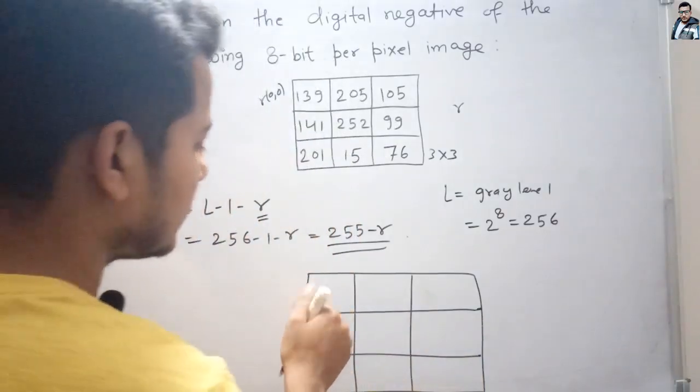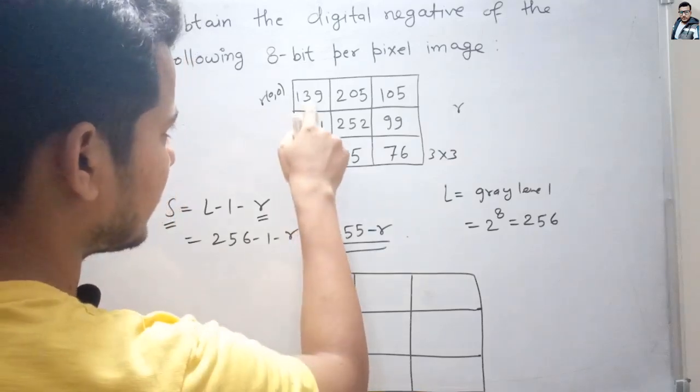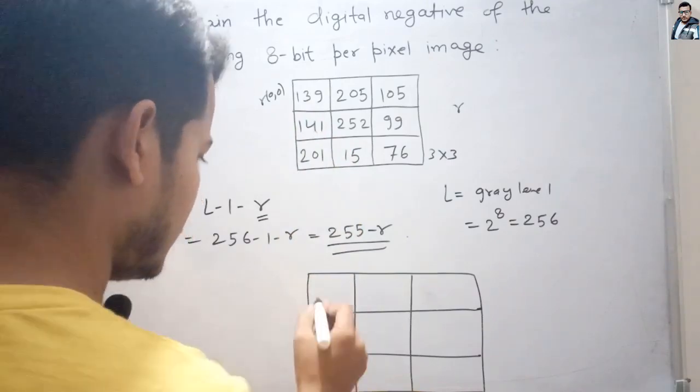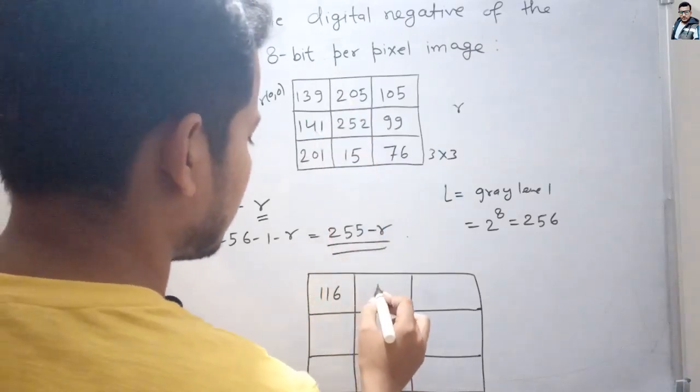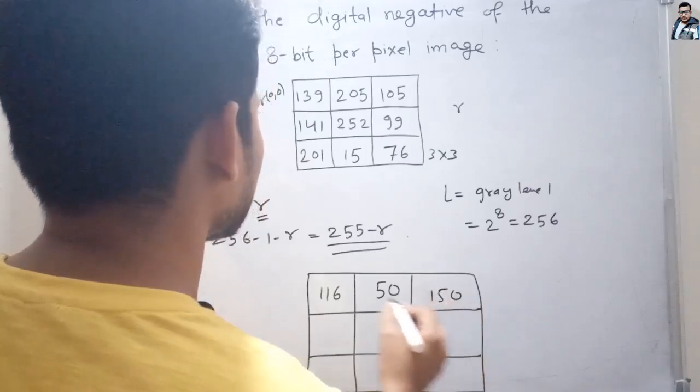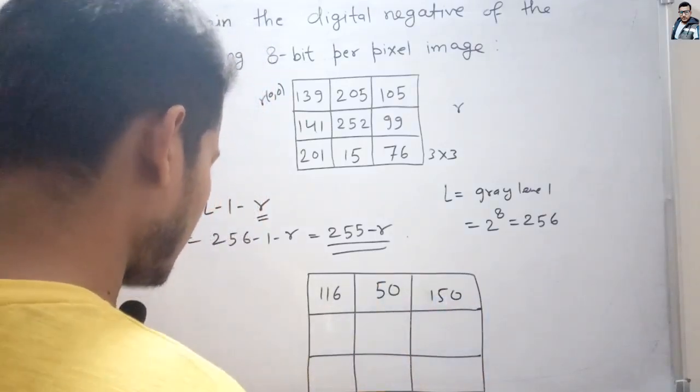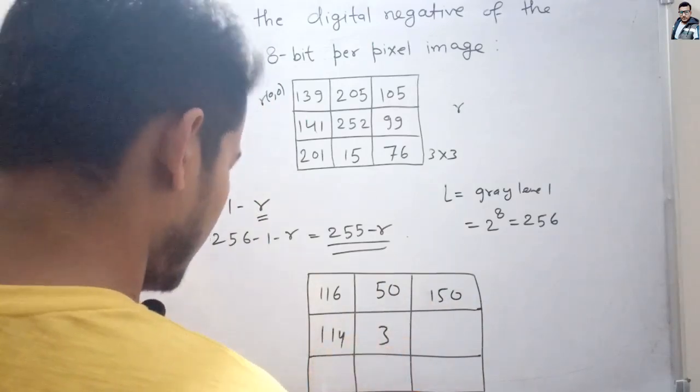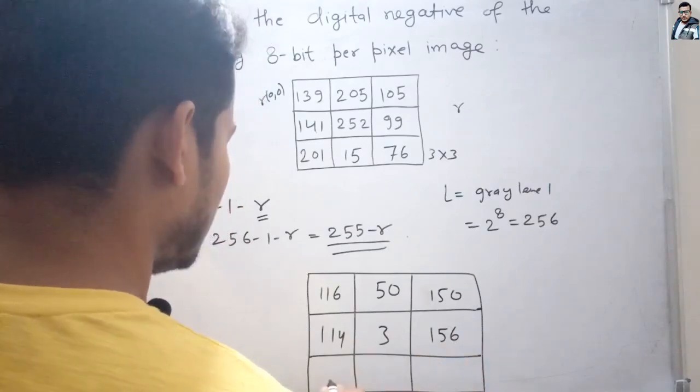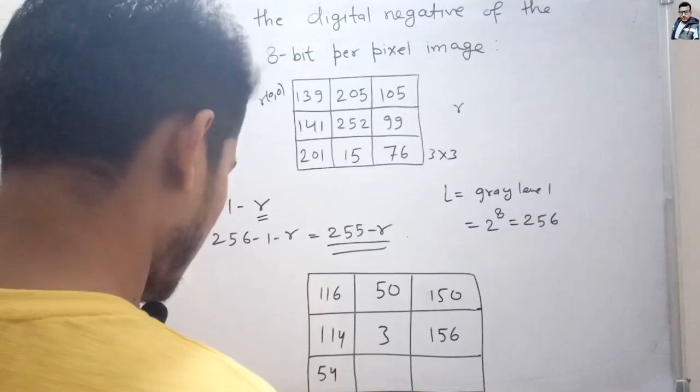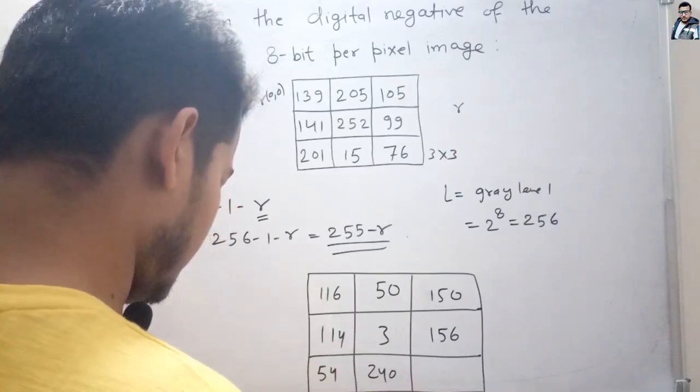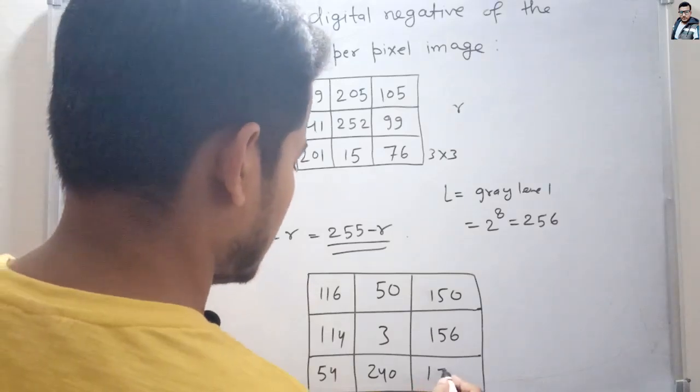Applying the formula to each pixel: we get 116, 50, 150 in the first row; 114, 3, 156 in the second row; and 54, 240, 179 in the third row.